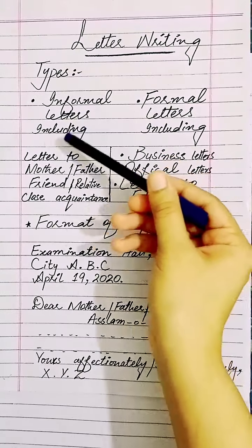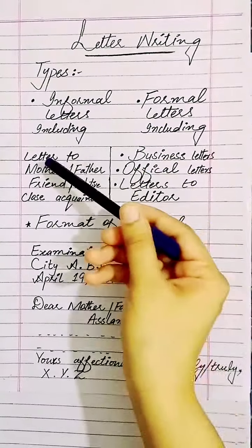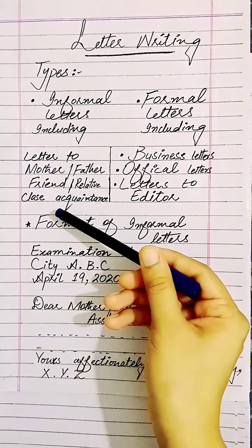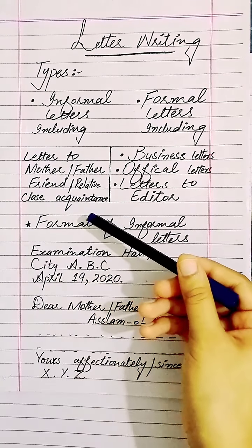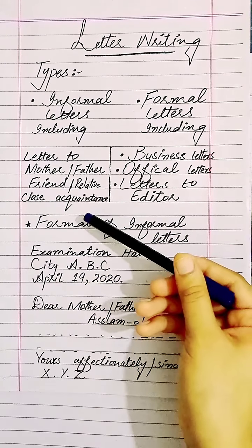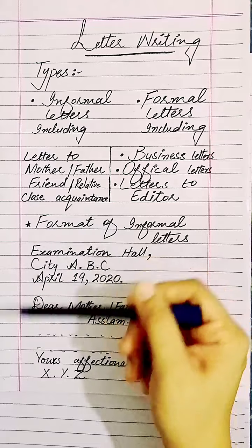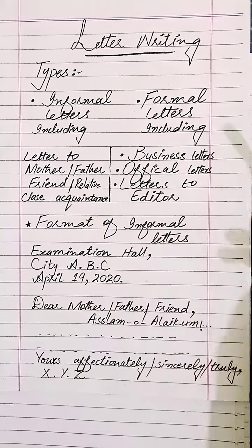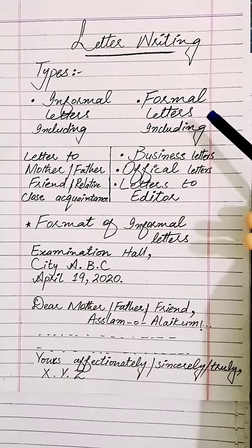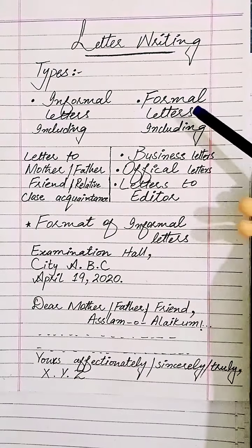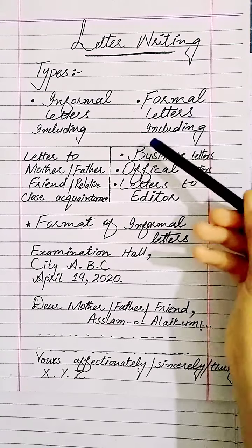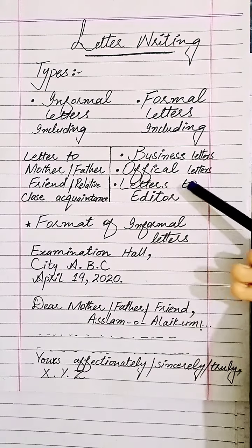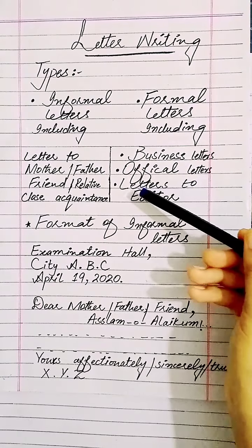Informal letters include letters to mother, father, friend, relative, or acquaintance. Acquaintances are people whom you know. Now, coming to the second type of letter — formal letter. Formal letters include business letter, official letter, and letter to the editor.